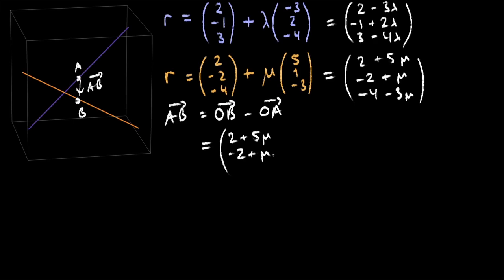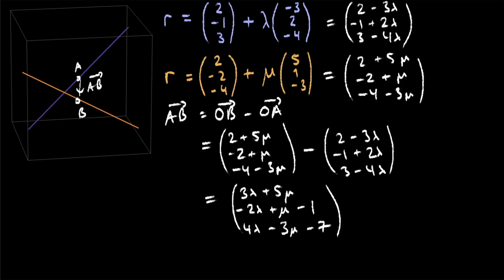We'll use these two equations to find A to B by just subtracting them from each other. And when we subtract them from each other, we end up with 3 lambda plus 5 mu, minus 2 lambda plus mu minus 1, and 4 lambda minus 3 mu minus 7.